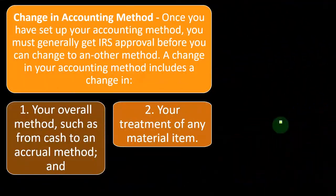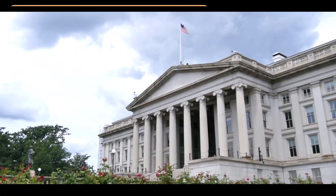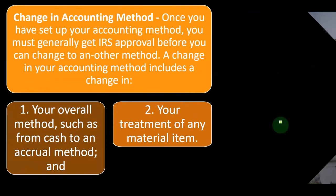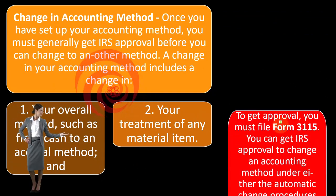For example, if inventory is now a more significant part of your business and you're changing from cash to accrual, the IRS would likely approve that. But if you're just saying you want to change methods without a clear reason, the IRS would be more skeptical and would want consistency in that process.